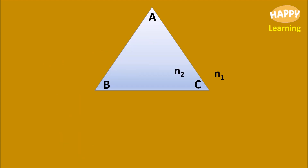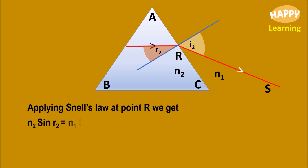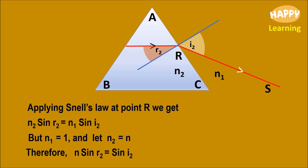On the other refracting surface, QR is the incident ray and this is the normal, so R2 is the angle of incidence and I2 is the angle of refraction. Applying Snell's law at point R, we get N2 sin R2 equals N1 sin I2. But N1 equals 1 and N2 equals N, so N sin R2 equals sin I2. Let this be equation number 5.